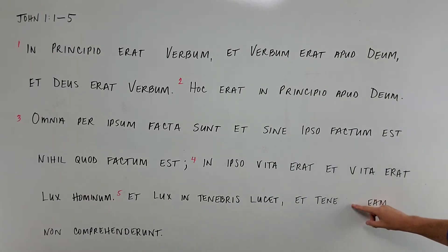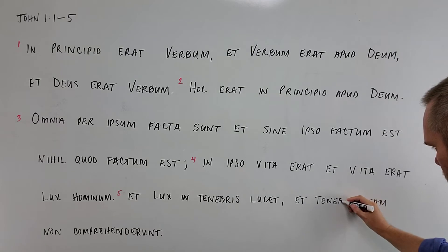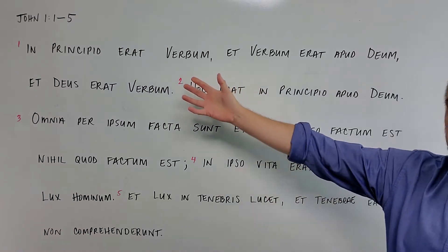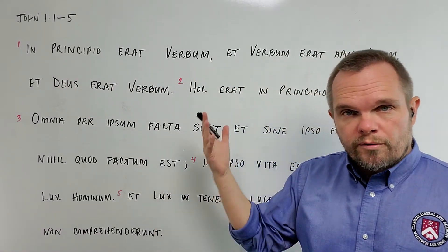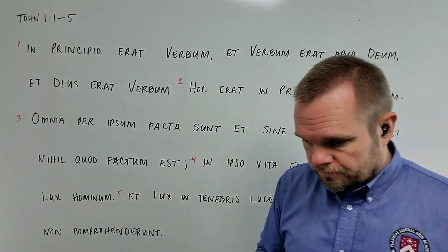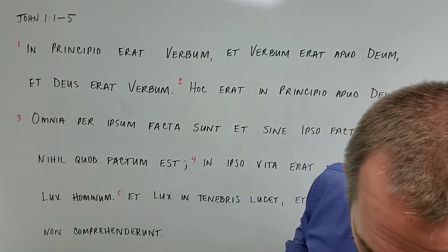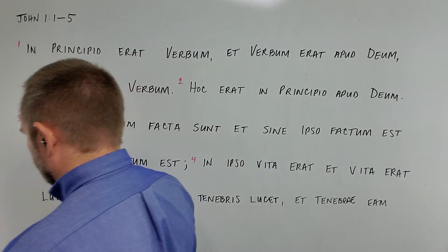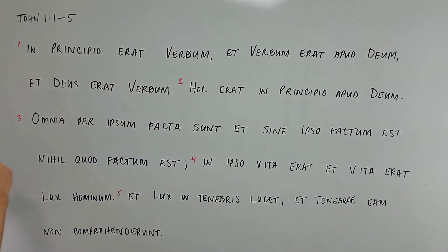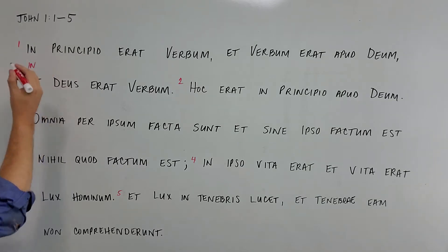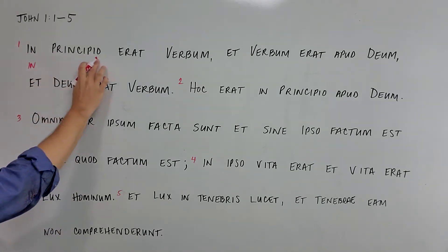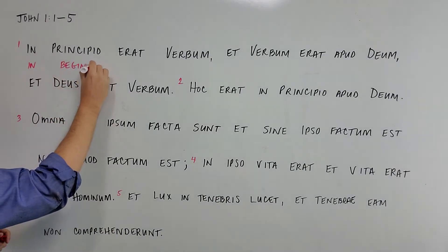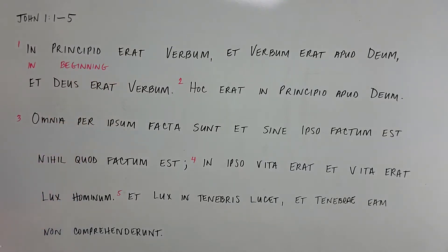One spelling error to fix here, and then we'll get started. Tenebris. Now we're going to go and simply translate word for word from Latin into English. Maybe I'll use a red marker so you can see the translation a little easier. The word 'in' is a preposition which simply means 'in' in English. 'Principio' means 'beginning.' I'll just write the translation under each word as we go.